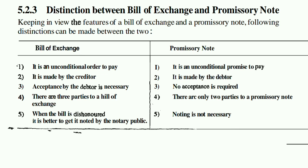In a bill of exchange, when it is dishonored, noting by the notary public is important and necessary. But in a promissory note, if it is dishonored — if the debtor doesn't pay — then noting is not necessary.